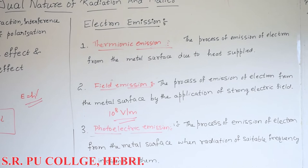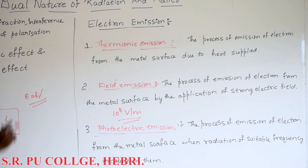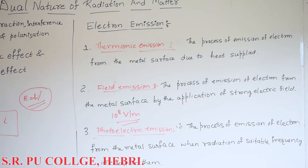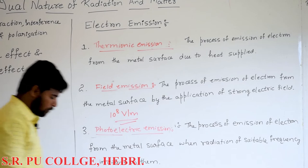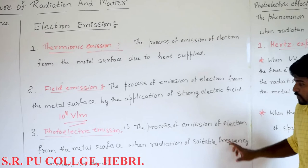The third type: photoelectric emission — the process of emission of electron from the metal surface when radiation of suitable frequency is incident on them. The light photon has energy E equal to H-nu, where E is the energy, H is Planck's constant, and nu is the frequency of radiation. That same type of energy is used here to cause photoelectric emission.